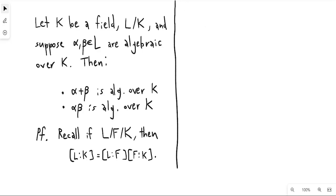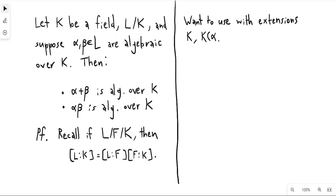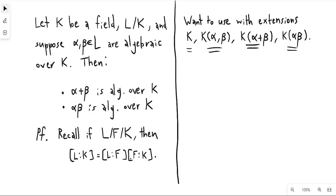What we want to do is use this property with the extensions k adjoin alpha beta, k adjoin alpha plus beta, and k adjoin alpha times beta. The idea is that if we can show that these latter two extensions are trapped in between, then the tower law will imply that these extensions are algebraic.